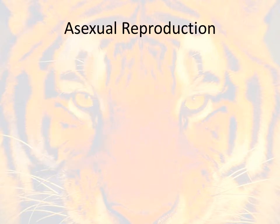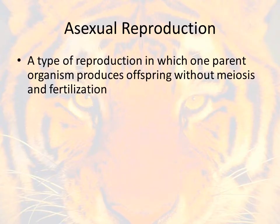Okay, so let's begin. If you look at your notes on the main idea, the first main idea we have is asexual reproduction. Go ahead and take notes on the right while we go through this section. Asexual reproduction is a type of reproduction in which one parent organism produces offspring, and this happens without meiosis and fertilization.